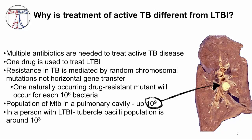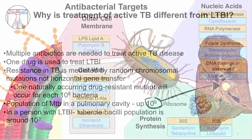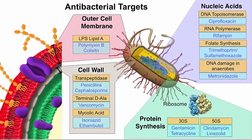I want to now discuss some of the common antibiotics used to treat TB and their antibacterial targets. Although the cell wall of mycobacteria is different from other bacteria, it is an important target for antibiotics against TB. Other antibiotics against TB target nucleic acid synthesis. Isoniazid, ethambutol, and rifampin are three of the four important antibiotics used to treat TB disease.